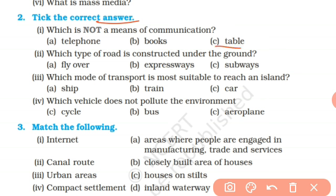Which type of road is constructed under the ground? We studied about roads - flyovers go upward then come down, expressways are superfast ways, and subways go underneath like tunnels. In our chapter we read about Atal Tunnel as an example, which was inaugurated recently by our PM Modi in Rohtang. Roads constructed underground are called subways.